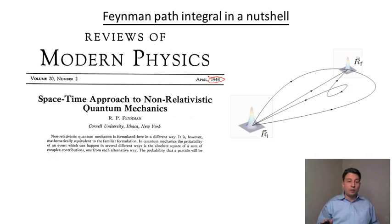And this paper is typical Feynman, so if you read the abstract, the first sentence of the abstract says non-relativistic quantum mechanics is formulated here in a different way. So he suggested a completely new way to think about things here.